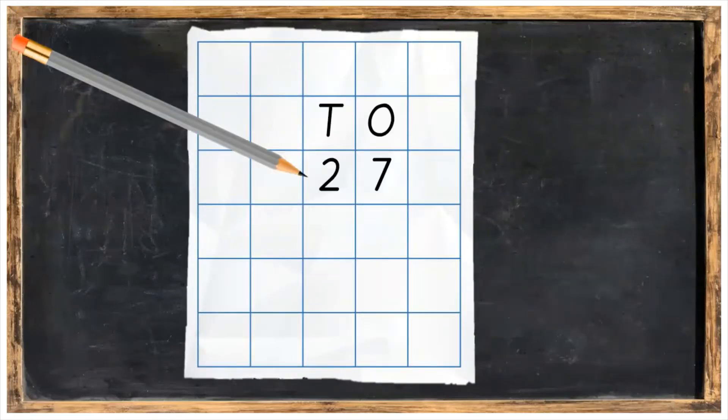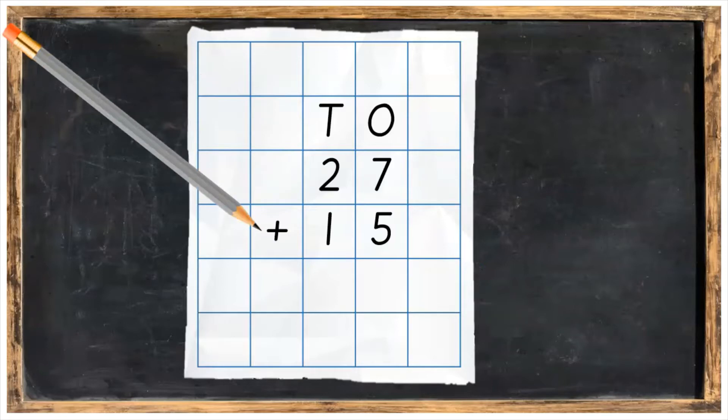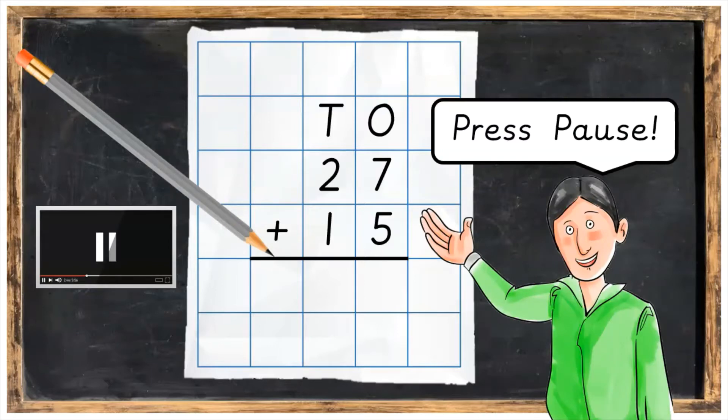What I'd like you to do first is write out the sum. We're going to have 27 plus 15, making sure your tens and ones are on the top and your line underneath the sum at the bottom. Press pause, get that much done and then press play when you're ready.